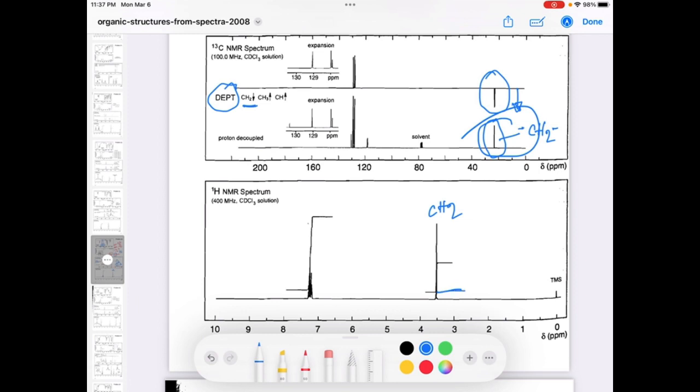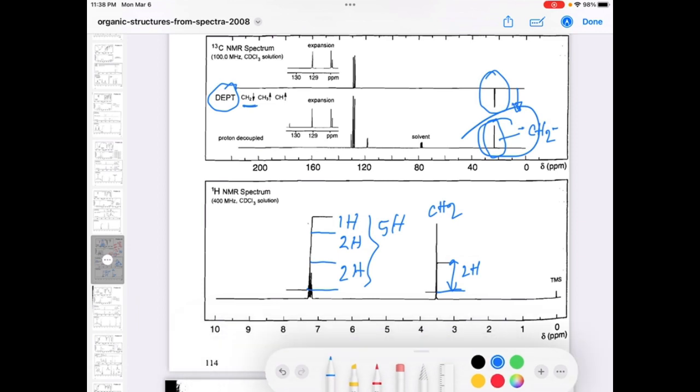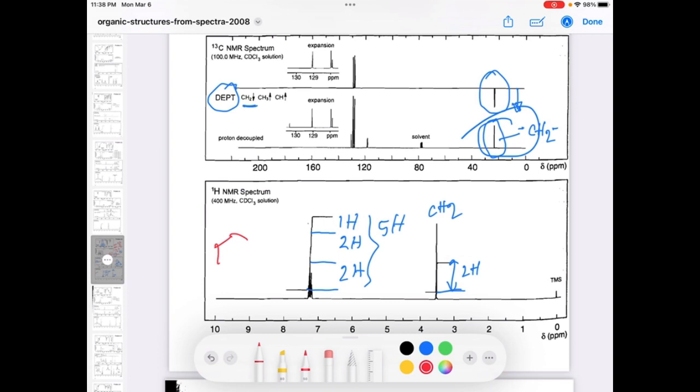Another way, since we know the aliphatic carbon is CH2 carbon, that means in the proton spectra, that peak is for the CH2, two hydrogens. If you think this integration value, the integral length, is for two hydrogens, if you consider the aromatic region, maybe equivalent to two hydrogen and there is another equivalent two hydrogen and one hydrogen, so total five hydrogens.